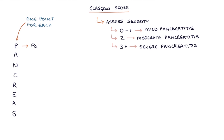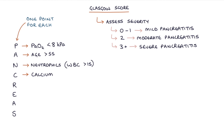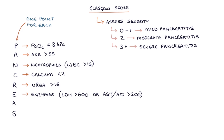P refers to PaO2 less than 8 kPa. A refers to age above 55. N refers to neutrophils — a white blood cell count above 15. C refers to calcium less than 2. R refers to blood urea level more than 16. E refers to enzymes — specifically LDH more than 600, or AST/ALT more than 200. A refers to albumin less than 32. And S refers to sugar — blood glucose more than 10.